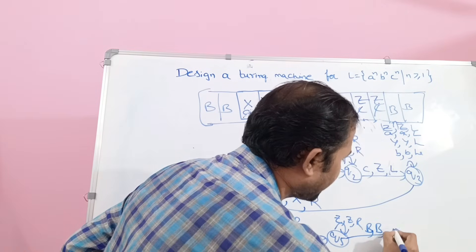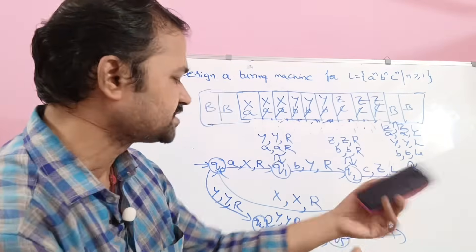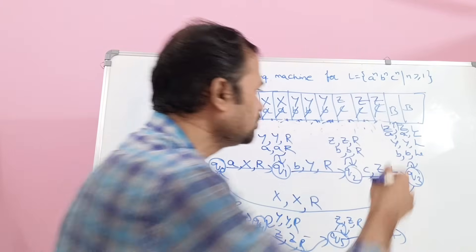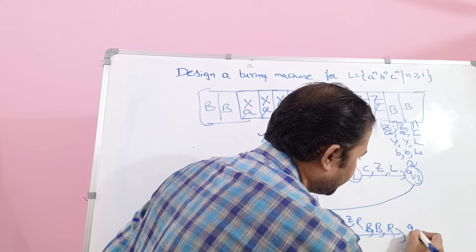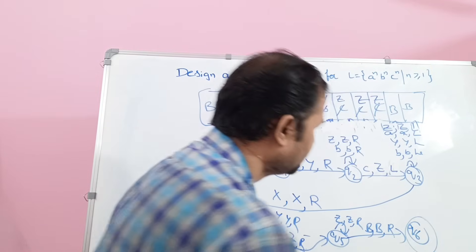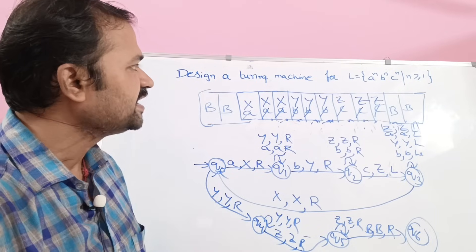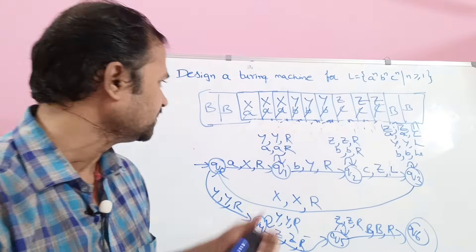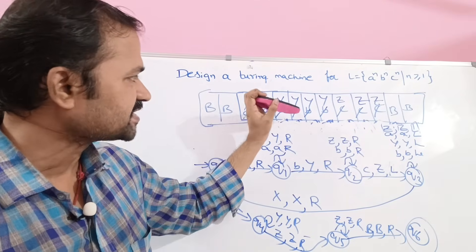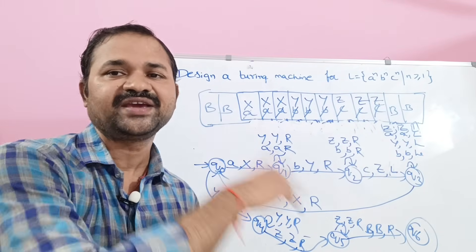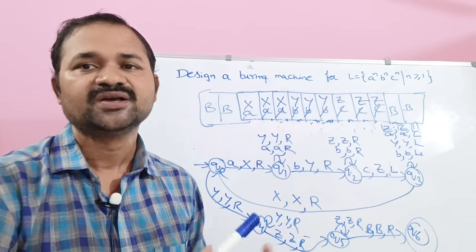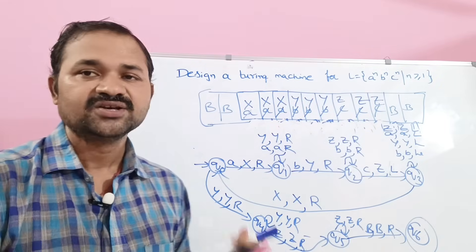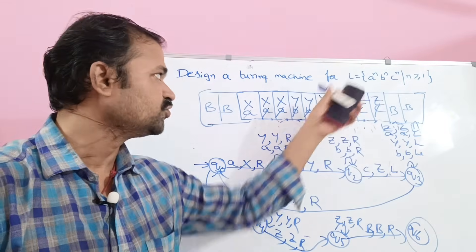When we encounter blank symbols, keep the blank symbol as is and move the head. This state is the final state. In this way we can design a Turing machine for L = {a^n b^n c^n | n ≥ 1}. We have three A's, three B's, and three C's — if we provide a valid string, we reach the final accepting state.